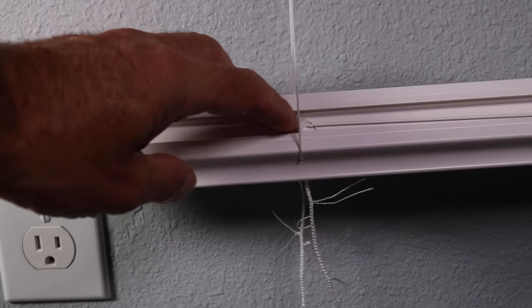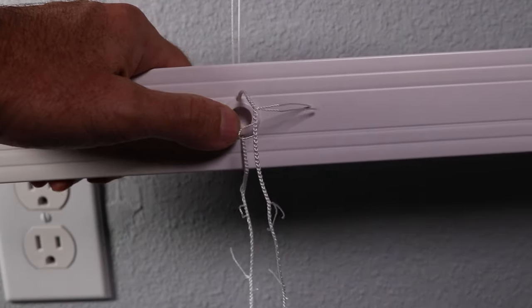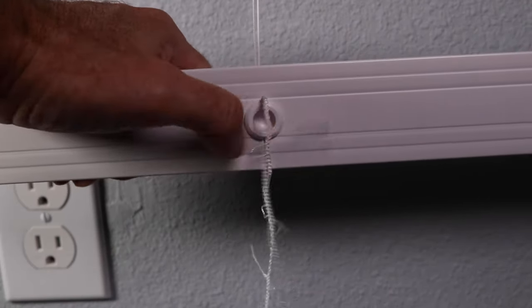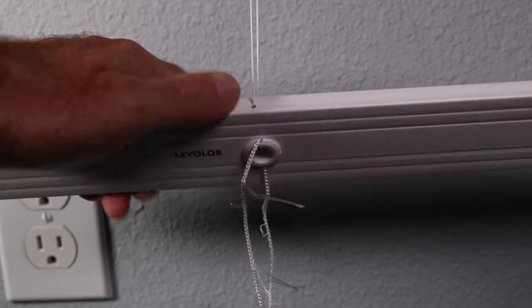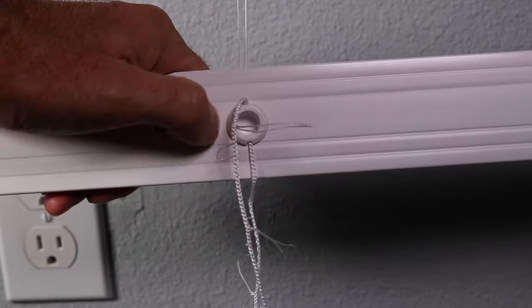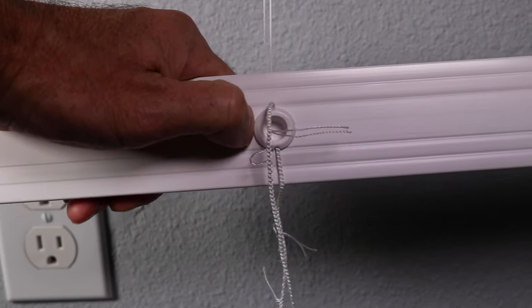Okay, so these buttons right here, they go through to the bottom right here. And we need to pull those out to get the string, the old string out of there, okay? You need to do that on all of them. Now you can pry these off with a screwdriver, but what will happen is you'll wind up scratching that to pieces.